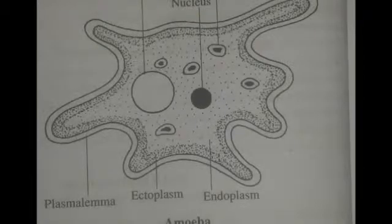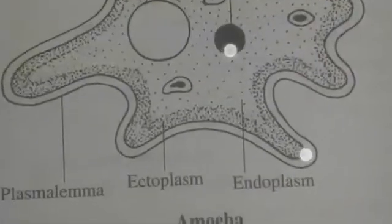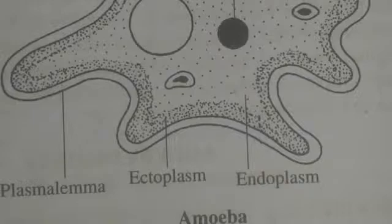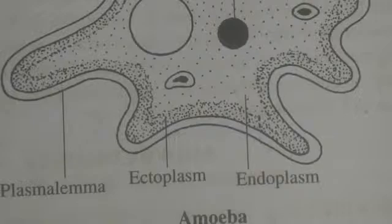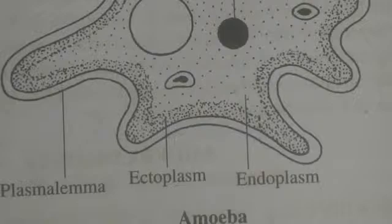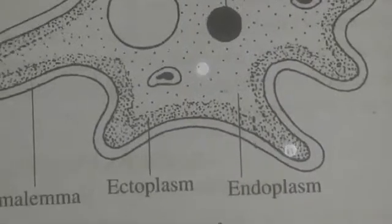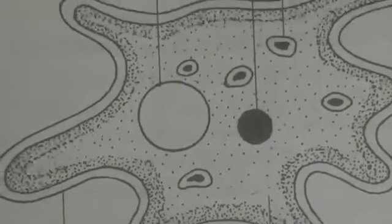The cytoplasm is divided into two regions: outer ectoplasm and inner endoplasm. Ectoplasm is thin, almost clear, non-granular and a homogeneous layer. On the other hand, endoplasm is a granular and transparent core. Endoplasm is further differentiated into two physically different and interchangeable states: an outer stiff layer called plasma gel and an inner fluid mass called plasma sol. This plasma sol can perform a cyclic streaming movement called cyclosis.